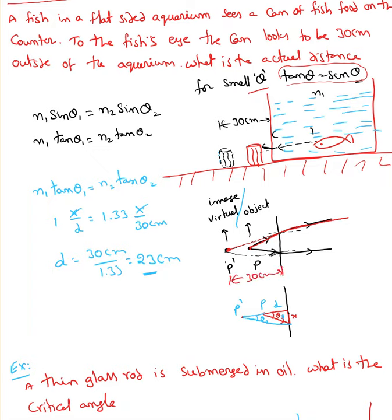For small angles, tan theta equals sine theta. I'm going to apply Snell's law: n1 sine theta1 equals n2 sine theta2, but substituting tan theta for sine theta. Looking at the small diagram, theta1 equals opposite over adjacent, which is x over d, where x is the horizontal distance and d is the unknown actual depth.